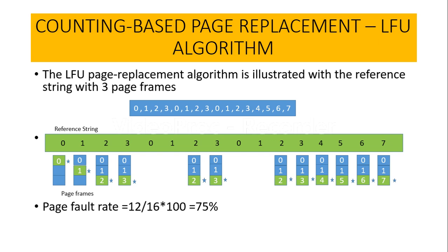Looking at the fault rate, we can count the total number of page faults: 1, 2, 3, 4, 5, 6, 7, 8, 9, 10, 11, and 12 — so 12 page faults in total due to the page replacement algorithm. The total number of references in the reference string is 16. So the page fault rate is 12 divided by 16, multiplied by 100, which gives us a page fault rate of 75 percent. This was the explanation of the Least Frequently Used page replacement algorithm.